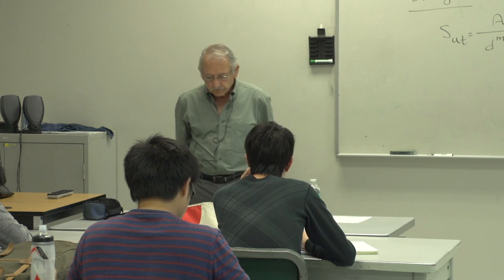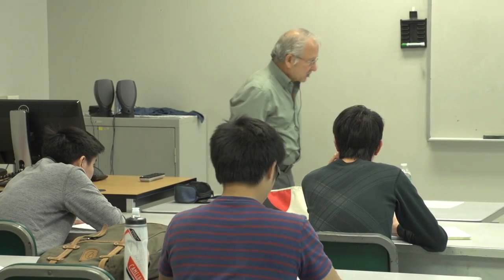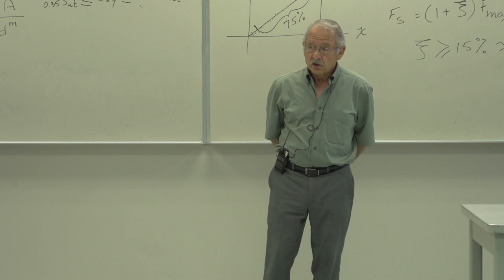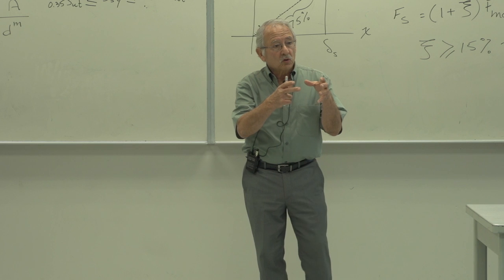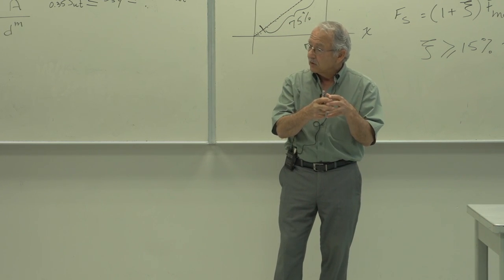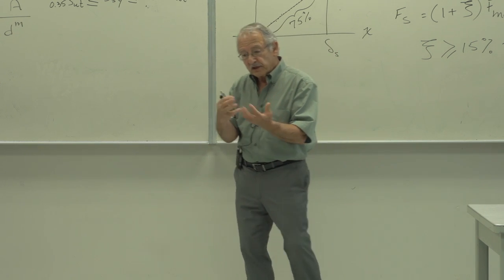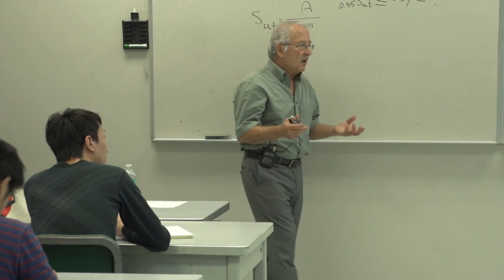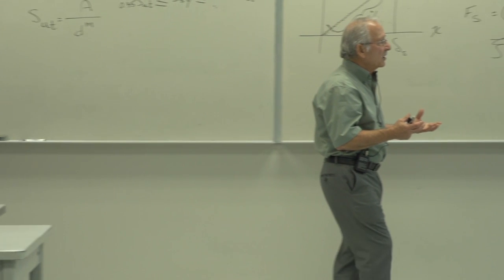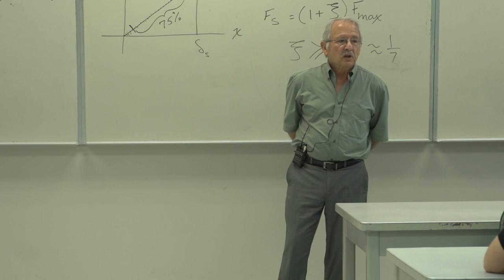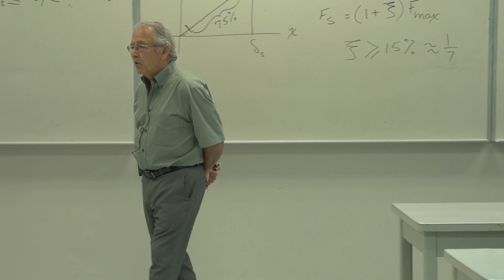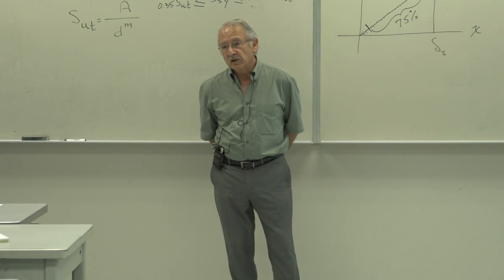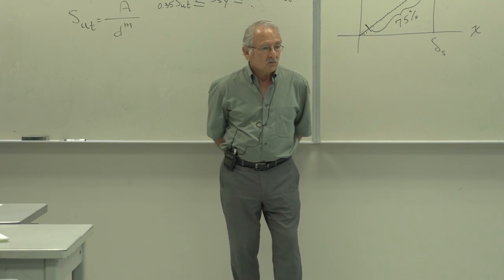When designing a spring, you should consider how it will function — inside a hole or over a mandrel. If it's inside a hole, the outer diameter is limited; if over a mandrel, the inner diameter is limited. You use the mean diameter in calculations, which can be calculated from either. For example, if you have a two-inch hole, you might limit the outer diameter to 1.8 inches, giving 0.1 inch clearance.